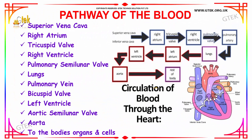Next we will see the pathway of blood — how blood circulates through the heart. Initially, impure blood enters the heart through the superior vena cava into the right atrium, passes through the tricuspid valve into the right ventricle, from which it is pumped into the pulmonary artery through the pulmonary valve, connecting to the lungs.